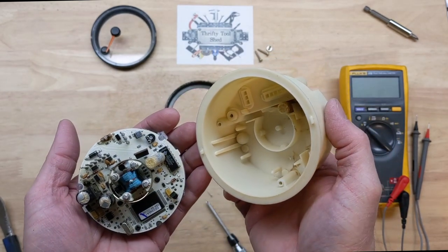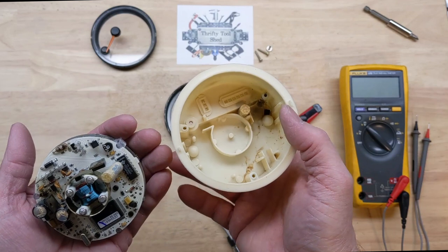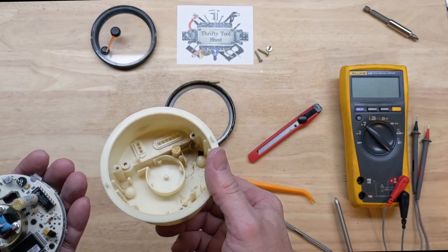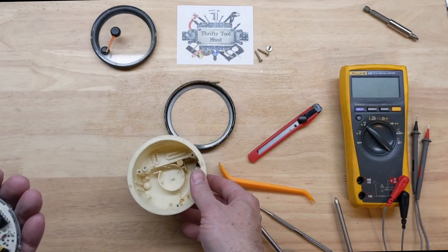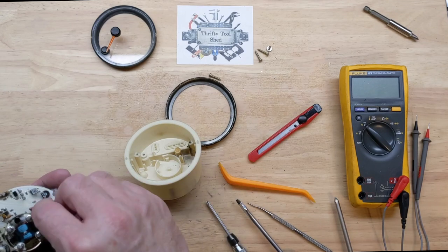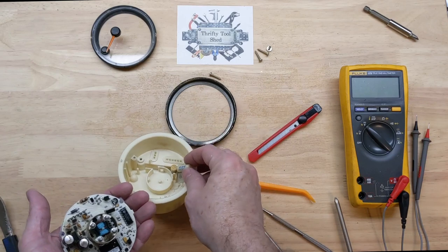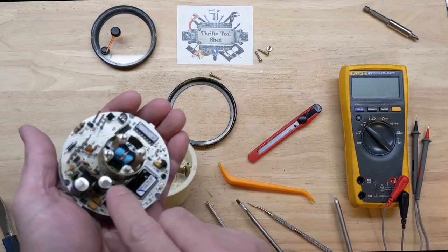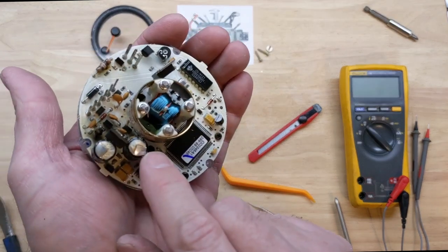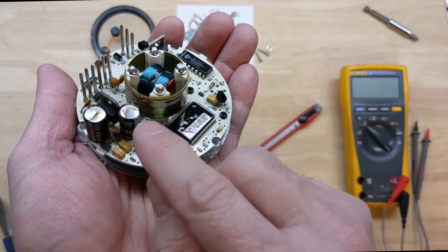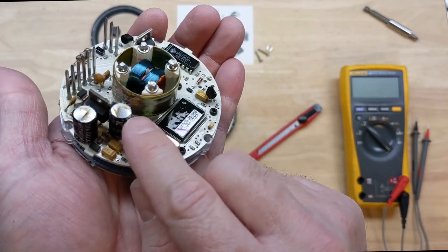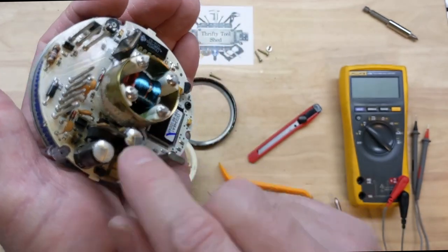And boy, is it ugly. Looks like an M80 went off in this thing. There's a lot of desiccant capsules. We'll put them back. Look at the caps. They ruptured and sprayed all over the insides.